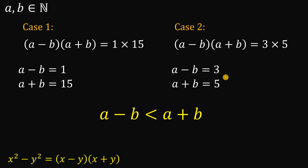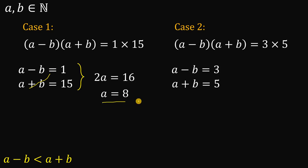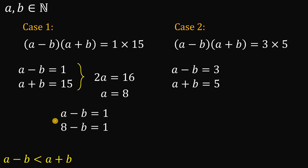Now let's solve for the values of a and b. In Case 1, adding the equations a minus b equals 1 and a plus b equals 15, the b terms cancel, giving 2a equals 16, so a equals 8. Substituting back into a minus b equals 1: 8 minus b equals 1, so b equals 7. Check: 8 minus 7 equals 1 ✓, and 8 plus 7 equals 15 ✓.